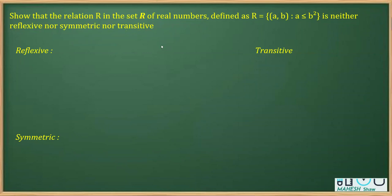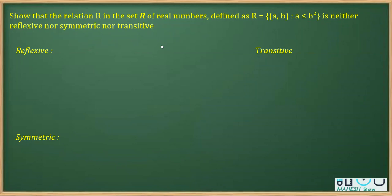Now, in order to prove it is not reflexive, we need to show that (a, a) does not belong to R. In such a case, we just give an example which validates that (a, a) does not belong to R. So I'm going to take a = 1/2.